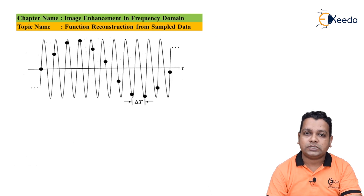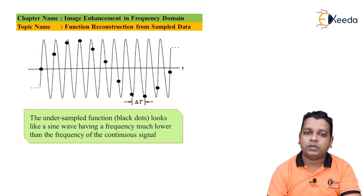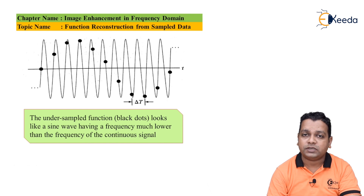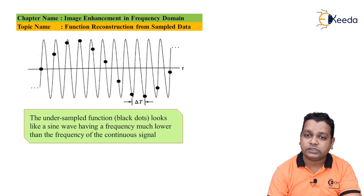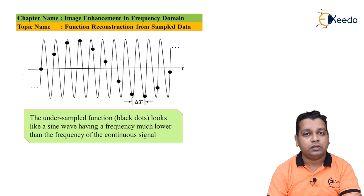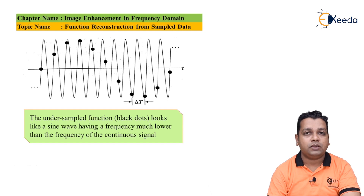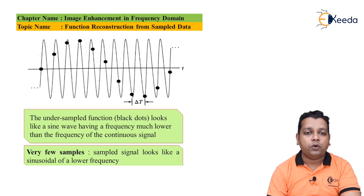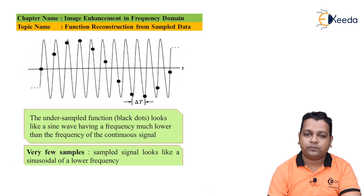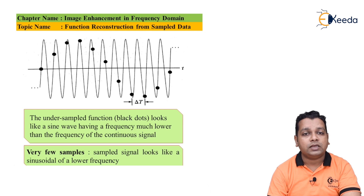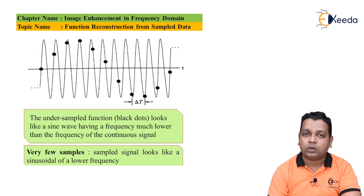Consider an example of an under-sampled function. The sample points (black dots) look like a sine wave having a frequency much lower than the frequency of the actual continuous signal (solid line), which has time duration Δt. When very few samples are taken, the sampled signal appears as a sinusoid of much lower frequency — this is aliasing.